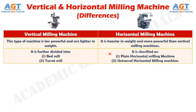A vertical milling machine is further divided into bed mill and turret mill, whereas a horizontal milling machine is classified as plain horizontal milling machine and universal horizontal milling machine. In short, vertical milling machines are versatile and mostly used, while horizontal milling machines are perfect for high chip removal work, high horsepower, and heavy duty applications.